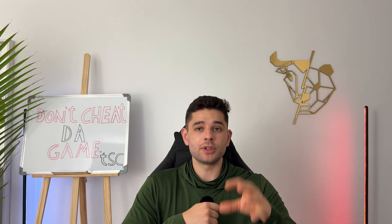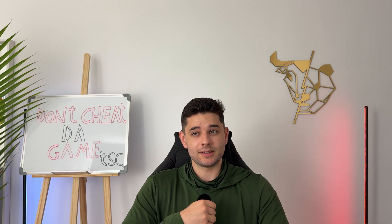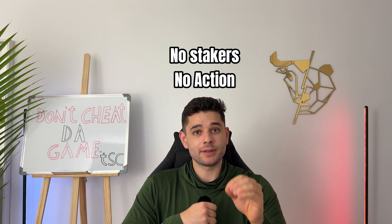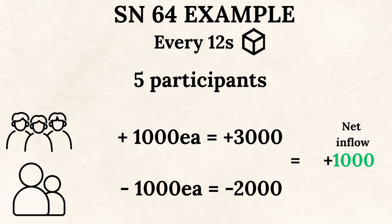Under the new model, tau-in — meaning how much tau you get into your subnet liquidity pool every 12-second block — would be strictly based off the net inflow of people staking or unstaking to your specific subnet. For example, let's take a subnet: in a range of 12 seconds, if three people stake 1,000 tau into that subnet, the subnet has a plus 3,000 mark for that block. At the same time, if two people unstake 1,000 tau each, that's minus 2,000 — so 3,000 minus 2,000 is a 1,000 tau net inflow for that subnet.